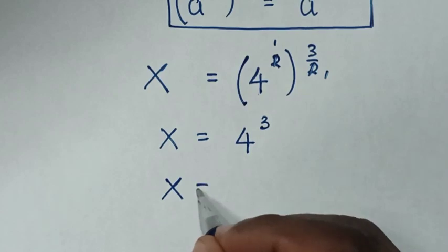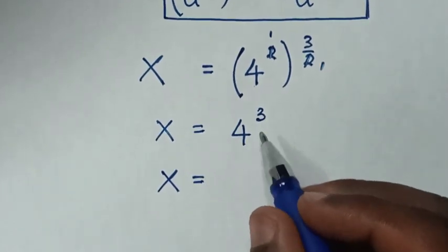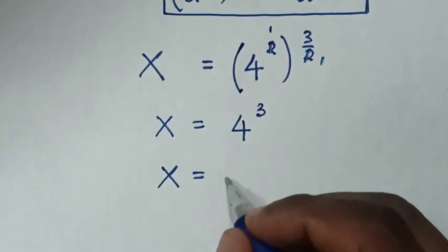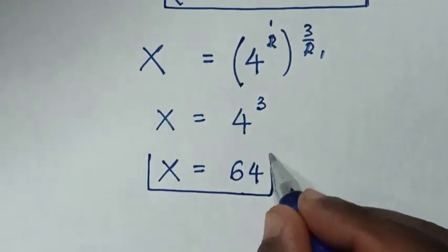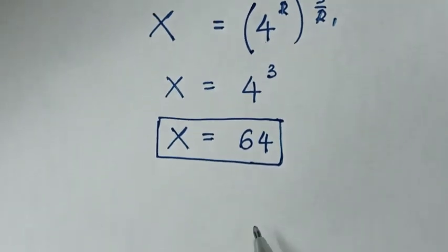Then it will be x equals 4 to the power of 3, same as 4 times 4 times 4, which is 64. So this is the final answer for the value of x in this problem.